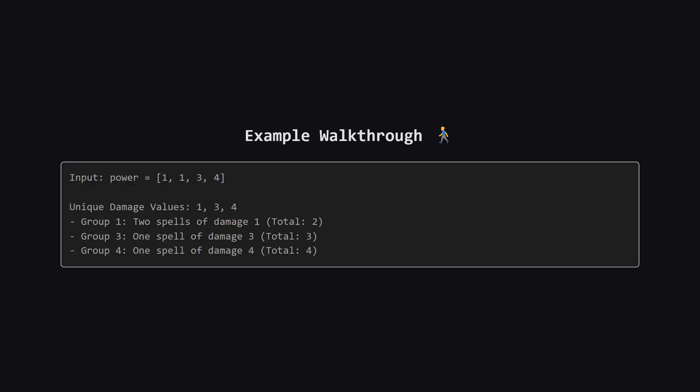Let's walk through an example to see how this works. Imagine our spells have damages 1, 1, 3, and 4. First, it's helpful to group them. We have two spells of damage 1, giving a total of 2, one spell of damage 3, and one of damage 4.